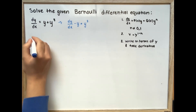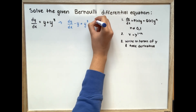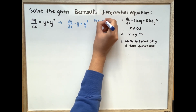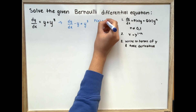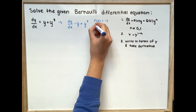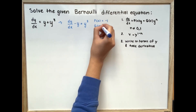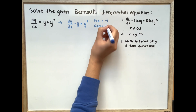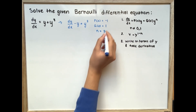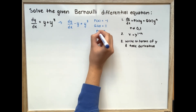We can set our p(x) equal to negative 1, our q(x) is just equal to 1, and our n is equal to 3.